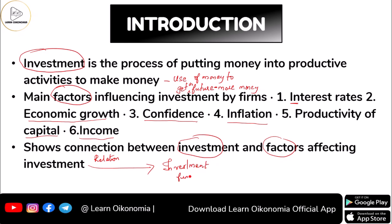It is a functional relationship between investment and factors of investment — investment is a function of those factors. Whenever we say investment function, we give more importance to two factors: the interest rate in the economy and income. We know that whenever the interest rate in the economy falls, this makes people take more loans from banks.